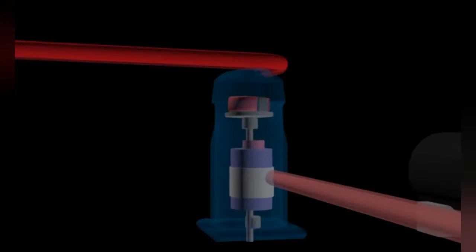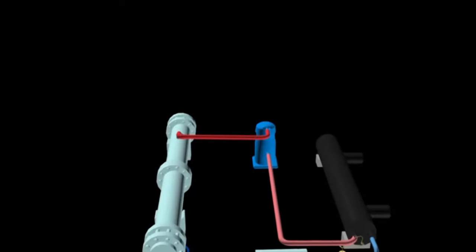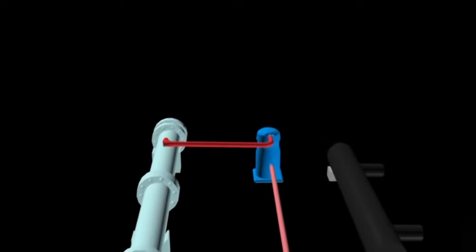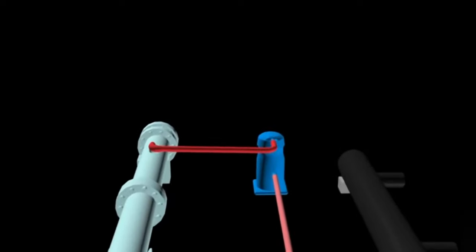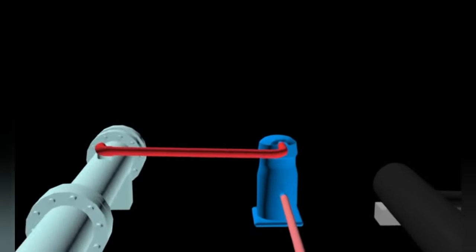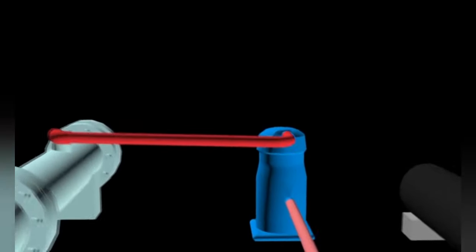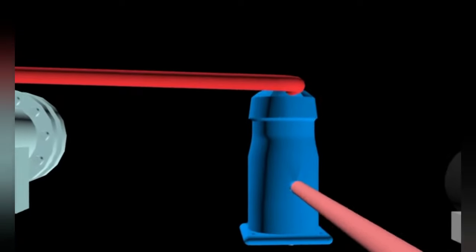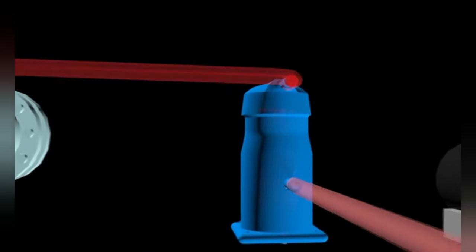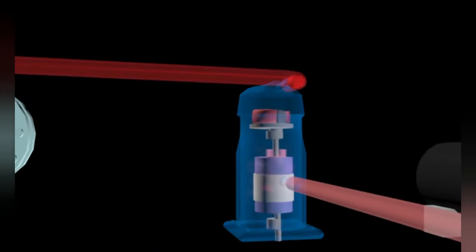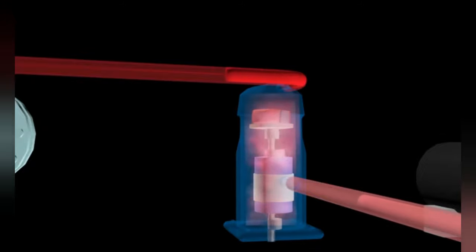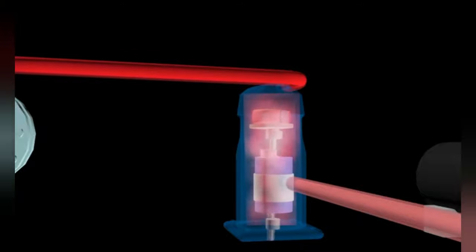The compressor works to increase the pressure of the refrigerant. In addition, it also serves to increase the temperature of the refrigerant higher than the temperature of the condenser water, so that heat transfer can occur in the condenser. The refrigerant enters the compressor as low pressure gas and exits as high pressure gas.